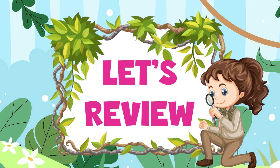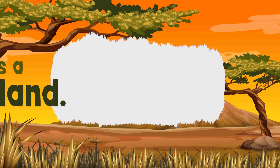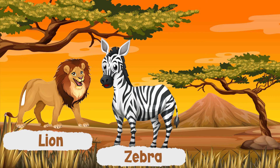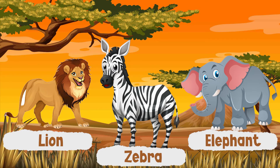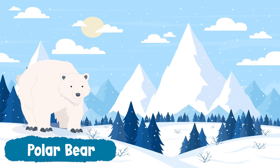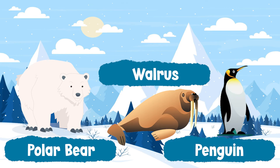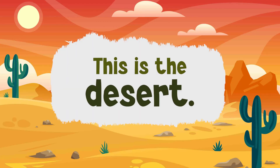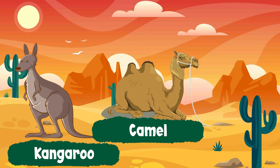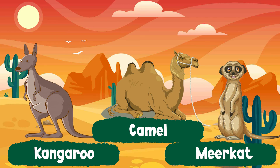Let's review. This is a grassland. Lions, zebras, and elephants live in grasslands. This is a polar habitat. Polar bears, walruses, and penguins live in polar habitats. This is the desert. Kangaroos, camels, and meerkats live in the desert.